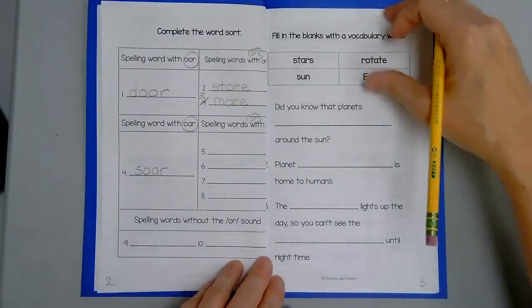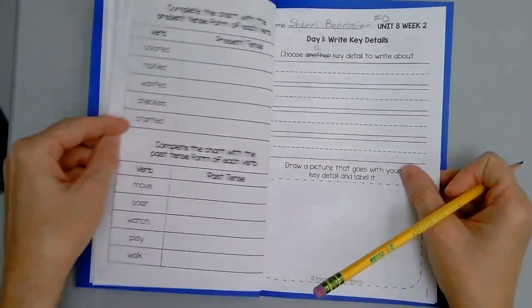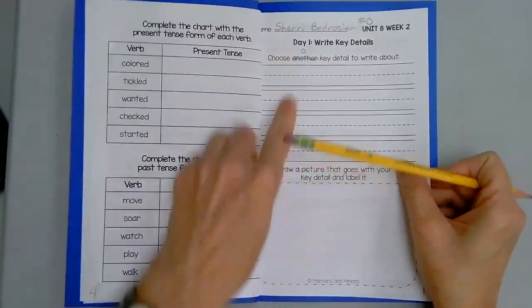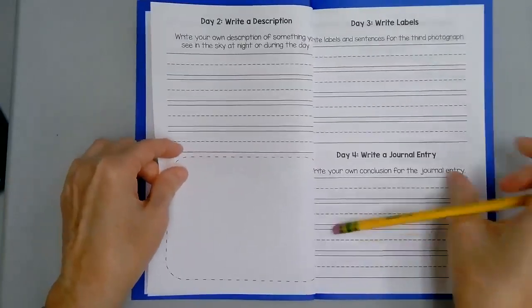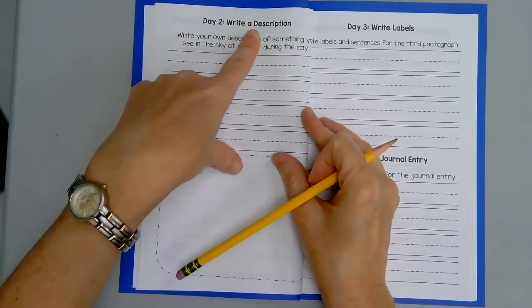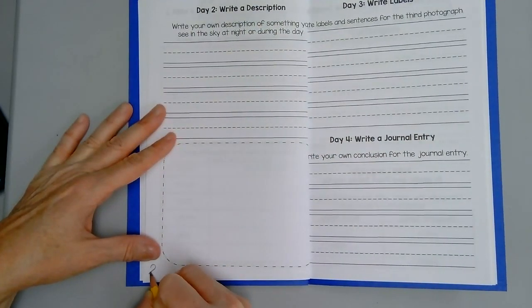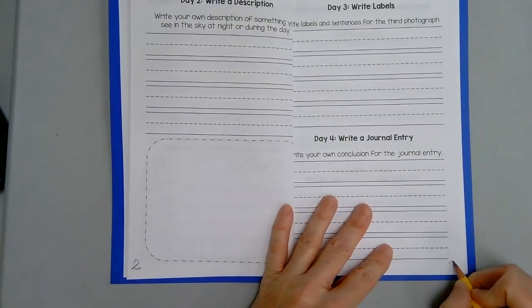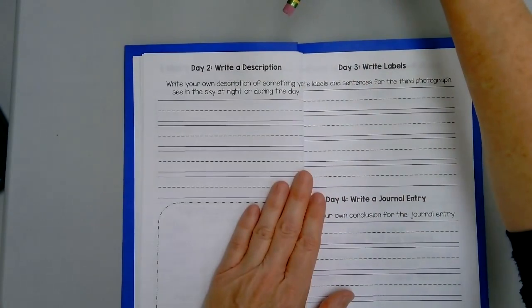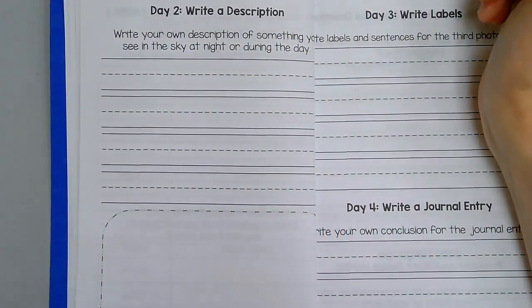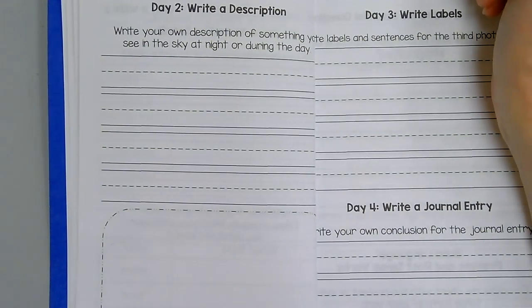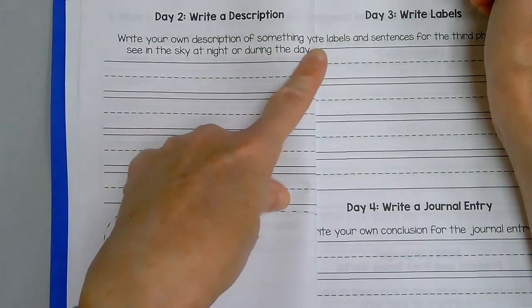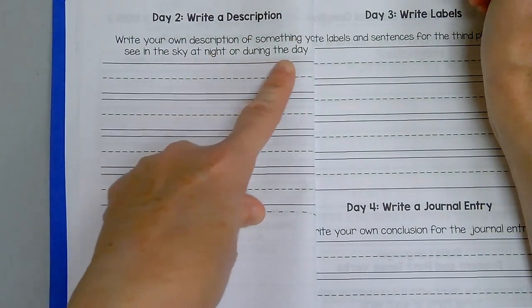Now go ahead and turn the page over. This is writing Day One — yesterday you completed this page. Turn over one more page where you see the words Day Two — Write a Description. Go ahead and label this page at the bottom number two, and label the next page number three. Today is Day Two. Remember that you read the story Night and Day — or had it played for you through your Benchmark app. Today I want you to write your own description of something you see in the sky at night or during the day.